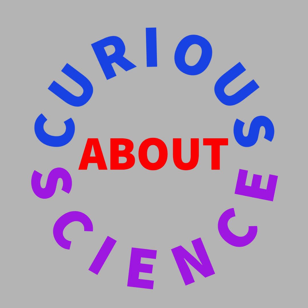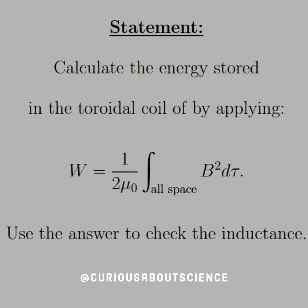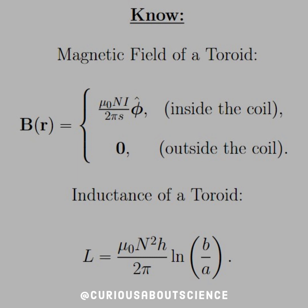Welcome back. We're going to stay on this energy topic for a few more questions. This one has an implication with the circuitry that we use. Calculate the energy stored in the toroidal coil by applying W = 1/(2μ₀) times the integral over all space of B² dτ. Use the answer to check the inductance. So this is a two-fold question, and we'll dive into that as we talk about what we need to know.